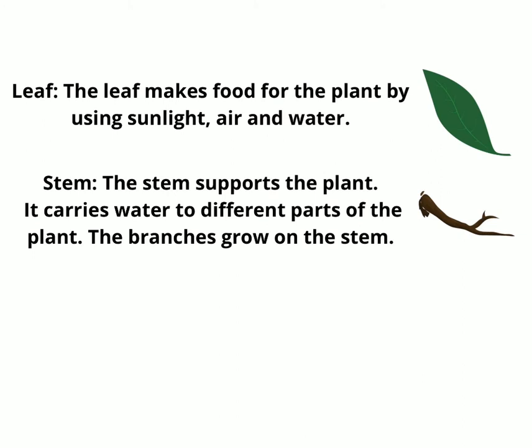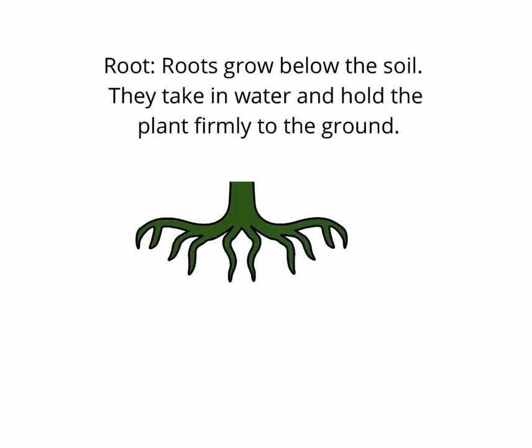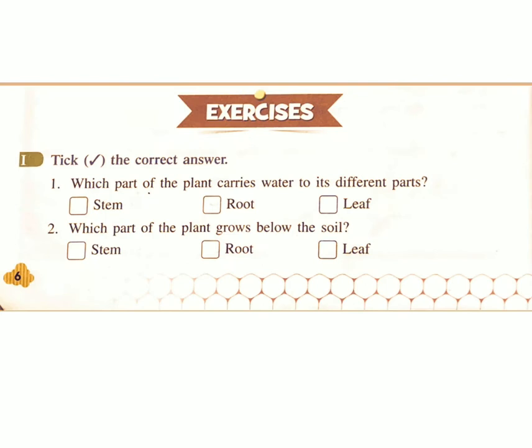The stem supports the plant and carries water to different parts of the plant. The branches grow on the stem. Roots grow below the soil — they take in water and hold the plant firmly to the ground.